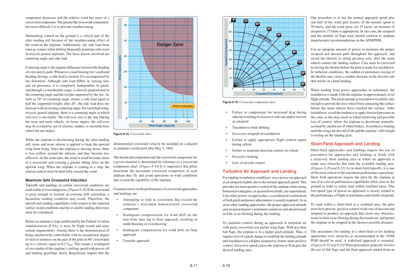Common errors in the performance of crosswind approaches and landings include: attempting to land in crosswinds that exceed the airplane's maximum demonstrated crosswind component; inadequate compensation for wind drift on the turn from base leg to final approach resulting in undershooting or overshooting; and inadequate compensation for wind drift on final approach resulting in an unstable approach.